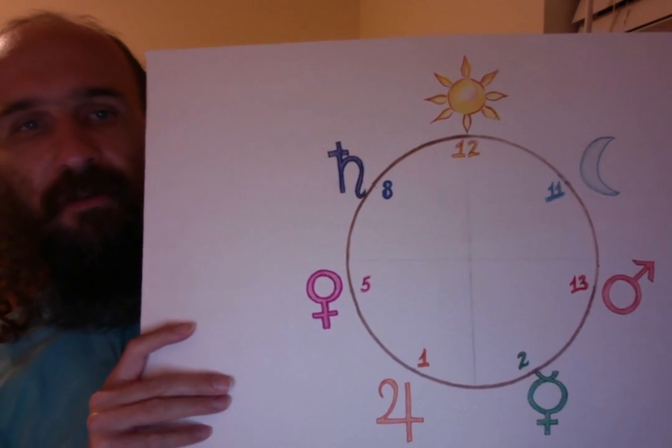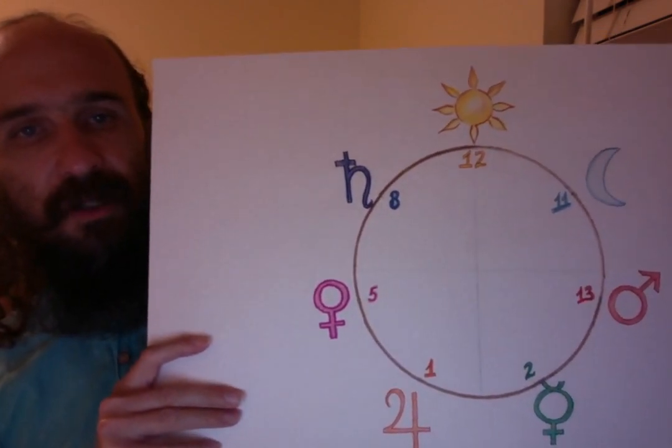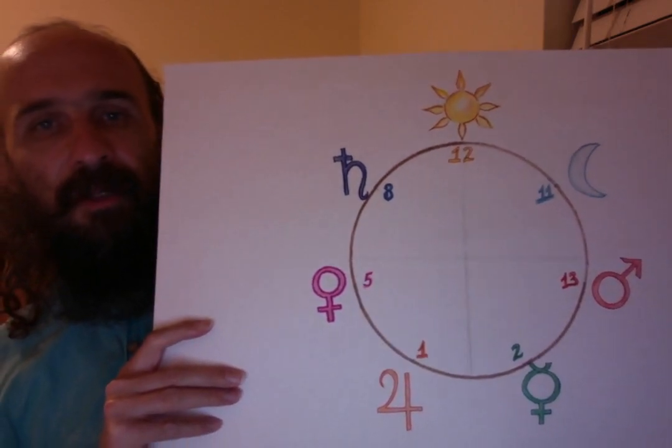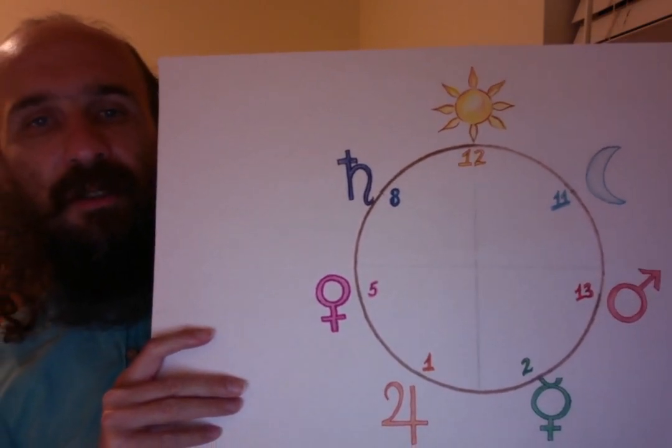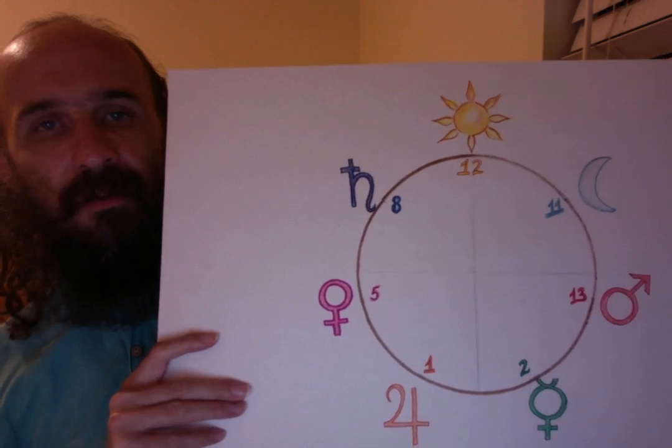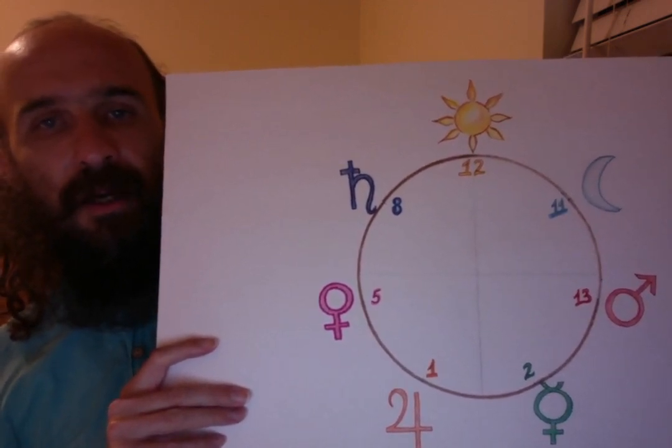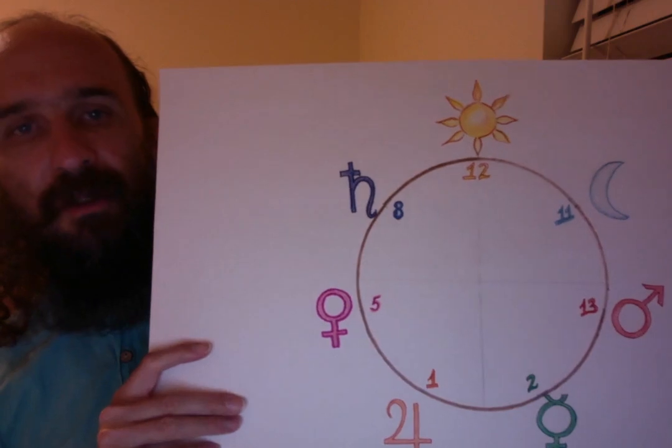So you've probably heard of the Fibonacci sequence that is central to all of this, but you probably haven't heard of modular arithmetic. And so in the next video I will explain how modular arithmetic works. It's basically clock arithmetic.